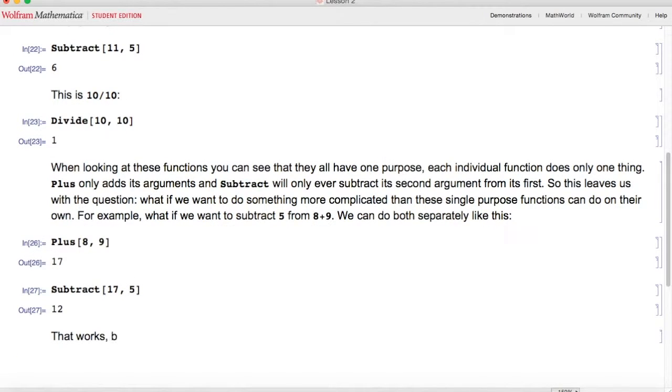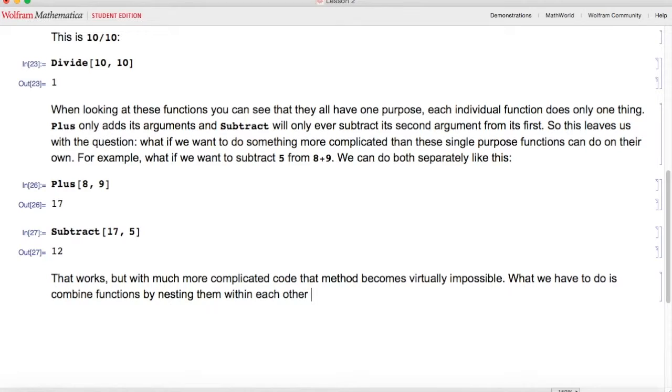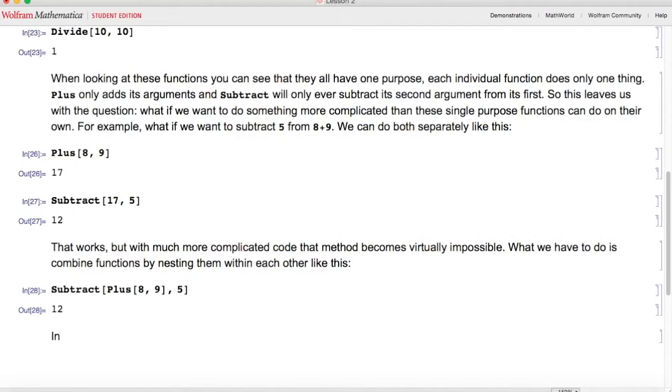That works, but with much more complicated code, that method becomes virtually impossible. What we have to do is combine functions by nesting them within each other like this. So I'm going to do Plus of 8 comma 9 and then I'm going to wrap that all in Subtract. So it becomes Subtract of Plus of 8 comma 9 comma 5, and then I hit shift enter and the output is 12. In the above code, the function Plus is the first argument of another function Subtract.